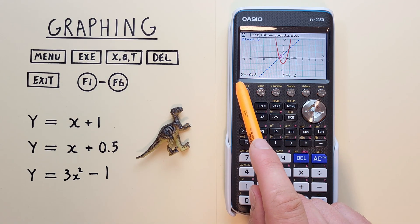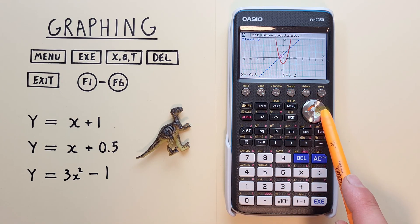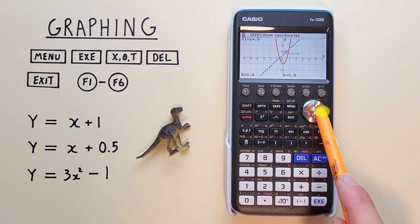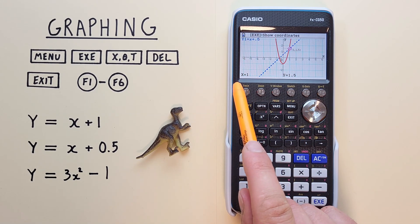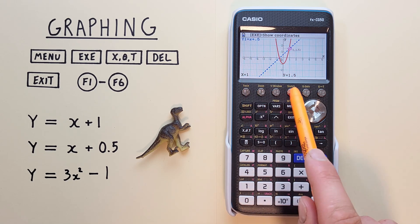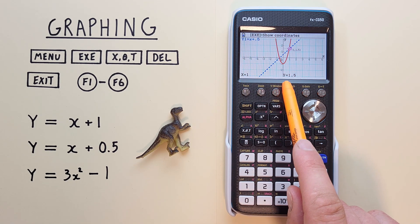At the bottom, you can see an X and a Y value. So this tells us at, for example, X equals 1, we have a Y of 1.5.